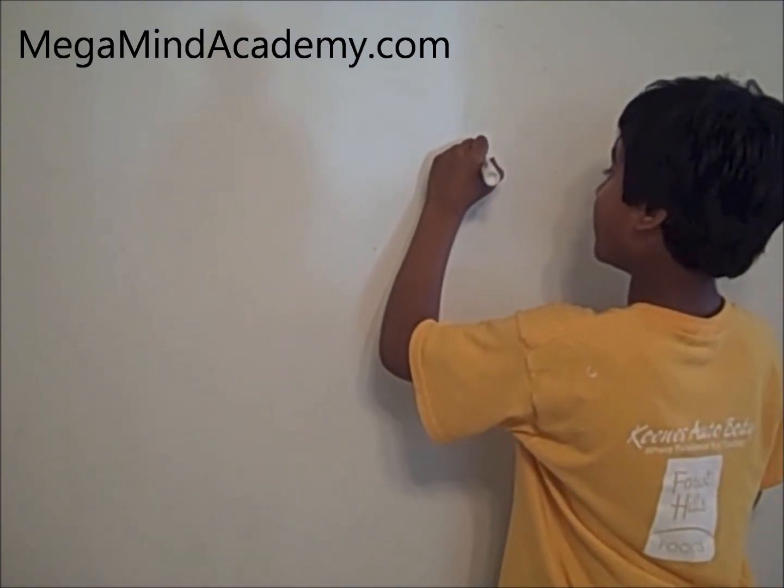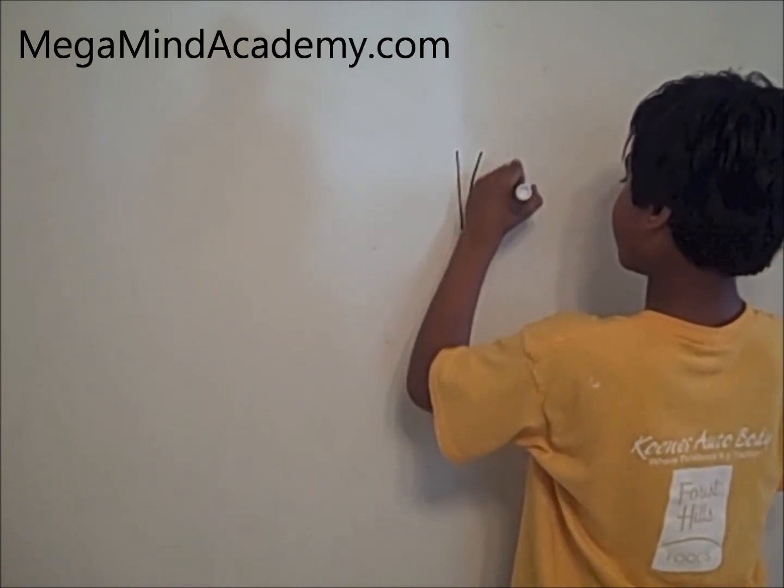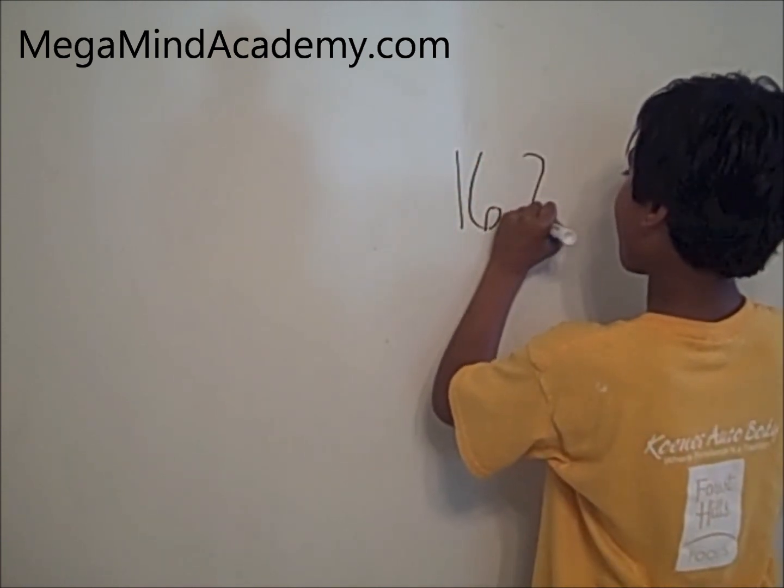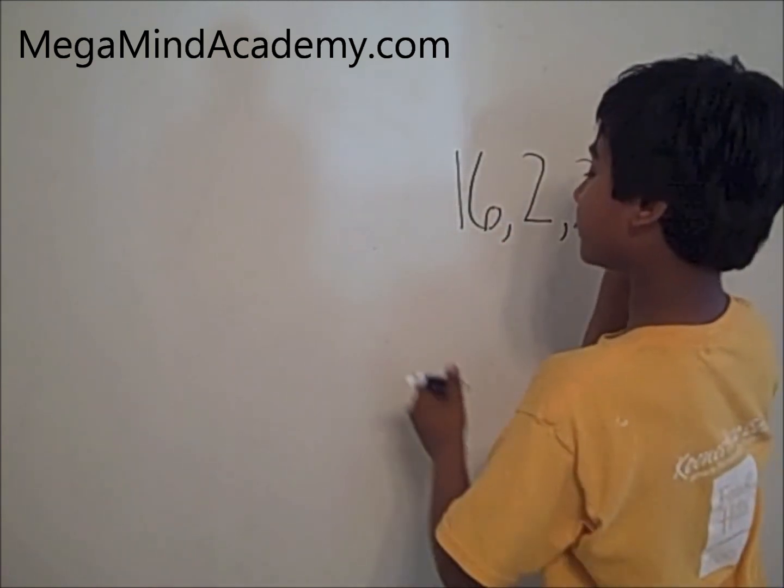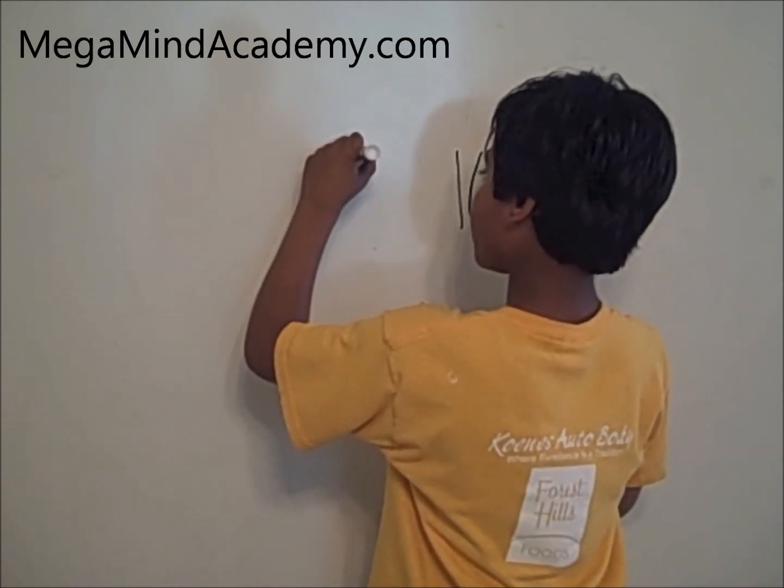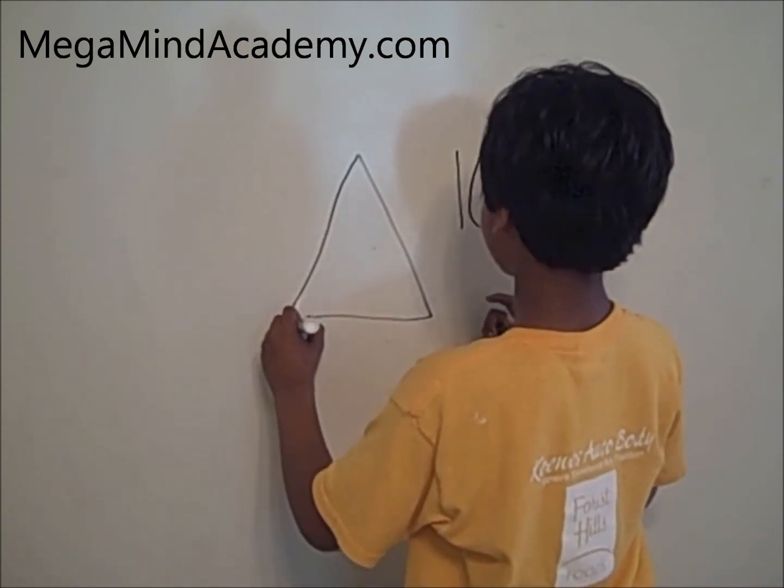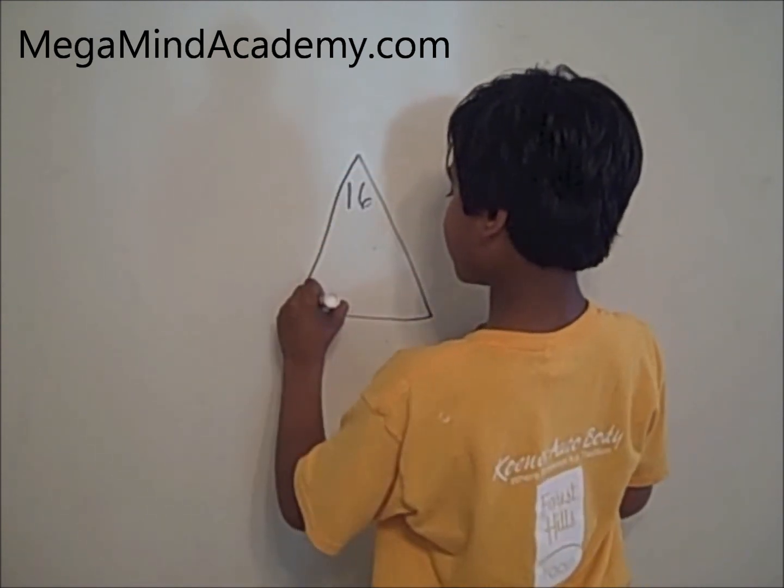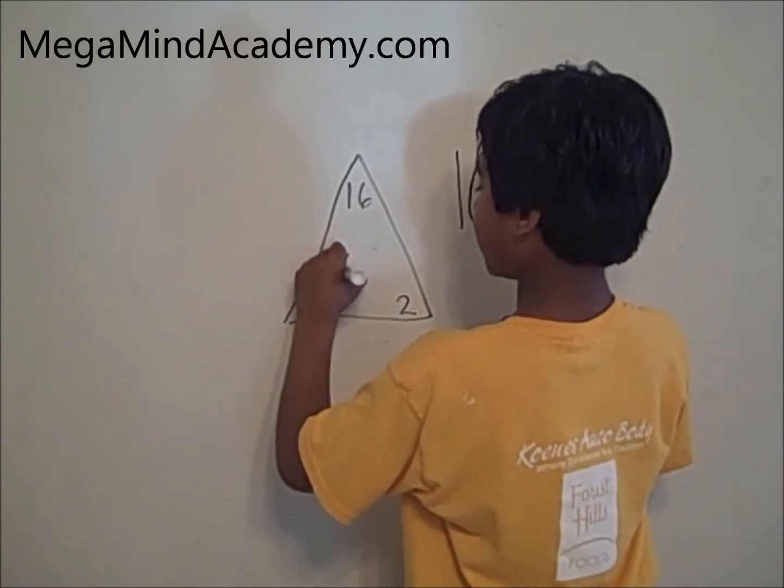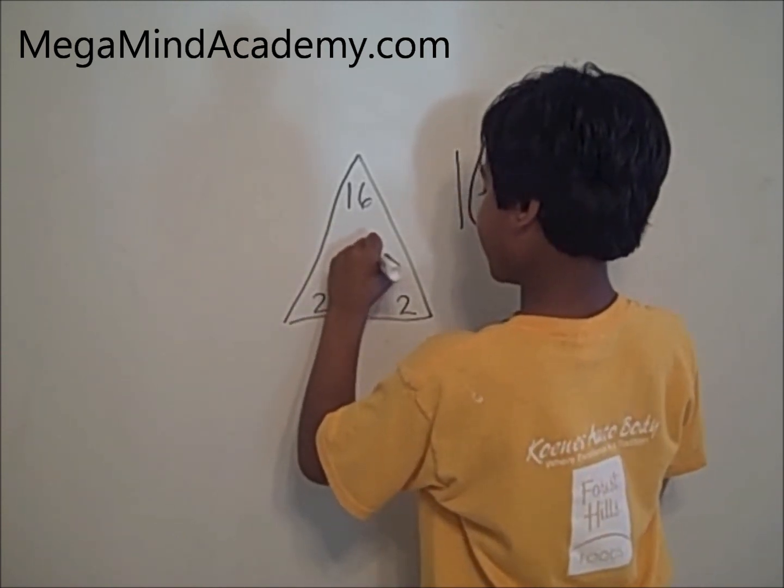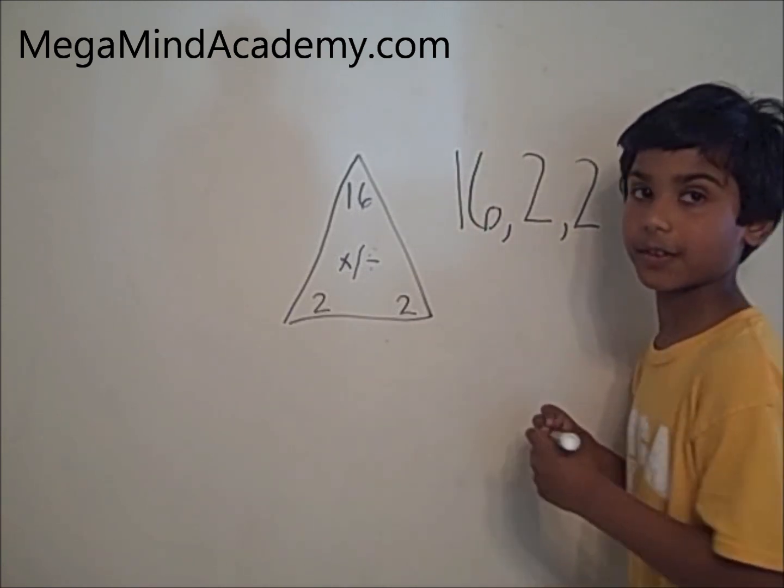Let's look at these numbers: 16, 2, and 2. Let's put these numbers inside the triangle. 16 goes at the top, 2 and 2 go at the bottom. Now we put the multiplication and division sign because we're doing multiplication and division relation among the numbers.